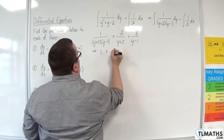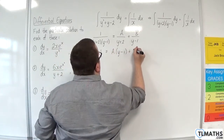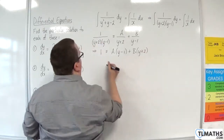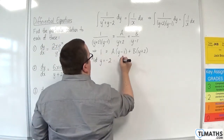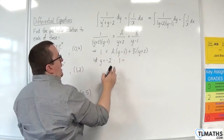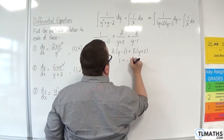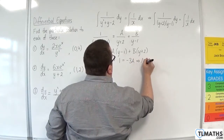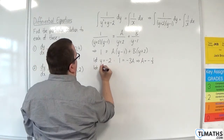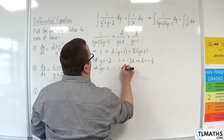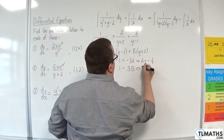So 1 is equivalent to A(y − 1) plus B(y + 2). Let y = −2: the left-hand side is 1, and the right-hand side gives −3A, so A = −1 third. If we let y = 1, the left-hand side is 1, the right-hand side will be 3B, so B = 1 third.